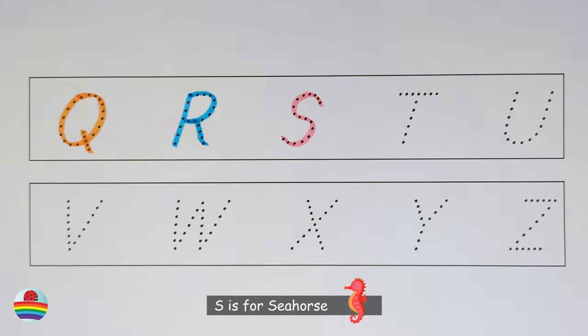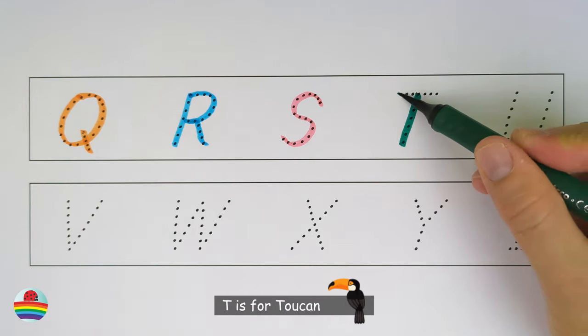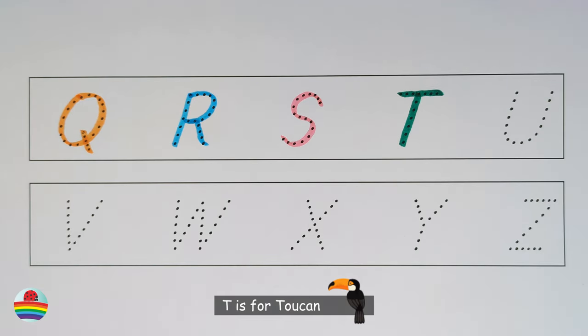S. S is for seahorse. T. T is for toucan. U. U is for gisu.